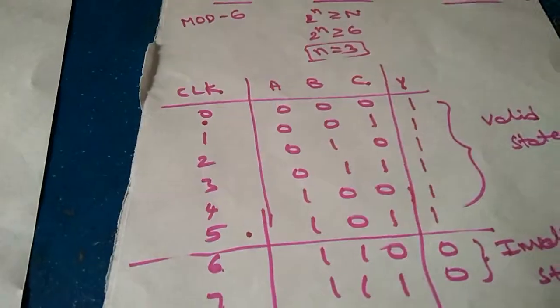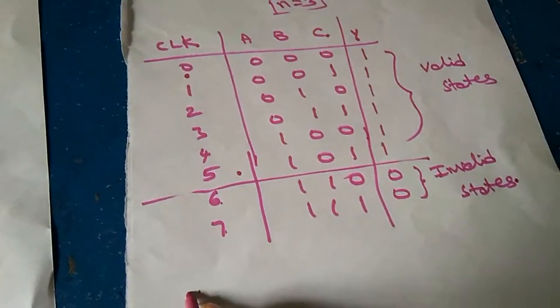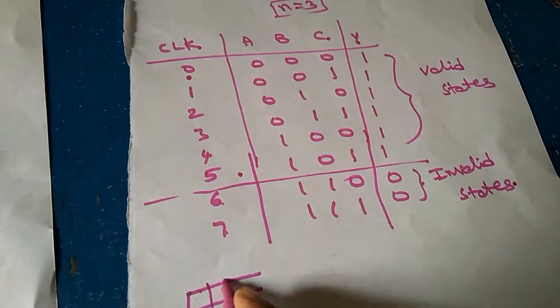This is the table. Now we have to draw the K-map and logic diagram and the K-map is for the output Y.